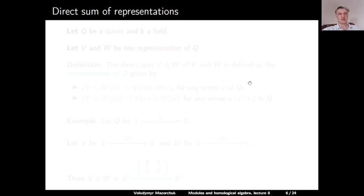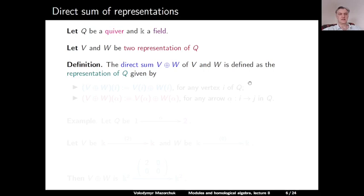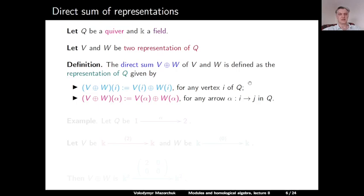Now let us talk about direct sums of representations. This is the easiest procedure for constructing new representations from existing ones. The direct sum of V and W is defined as the representation which assigns to each vertex I the direct sum V(I) ⊕ W(I), and to each arrow alpha the direct sum of the linear operators V(alpha) and W(alpha).